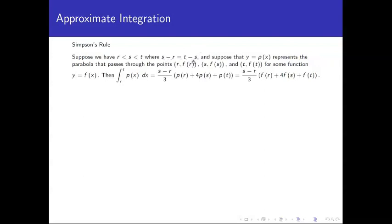Let r, s, and t be three equally spaced x-values — equally spaced because we're dividing the interval into n equal sub-intervals. Let p(x) be the parabola passing through (r, f(r)), (s, f(s)), and (t, f(t)). Working through the algebra and calculus, the integral of p(x) from r to t equals (s − r)/3 times [f(r) + 4f(s) + f(t)]. Since the parabola passes through the same points as the function, we can replace p with f.